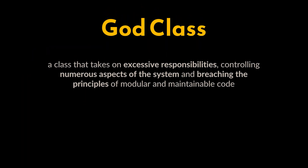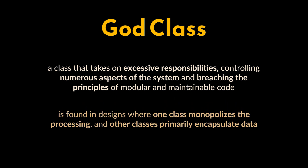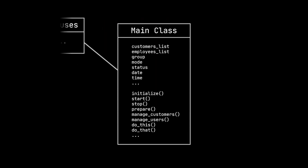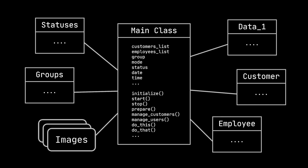A God Class is a class that takes on excessive responsibilities, controlling numerous aspects of the system and breaching the principles of modular and maintainable code. This anti-pattern is found in designs where one class monopolizes the processing and other classes primarily encapsulate data. It is characterized by a class diagram composed of a single complex class surrounded by simple data classes. Architectures with a God Class separate the business logic from the data, tending towards a procedural rather than object-oriented architecture.